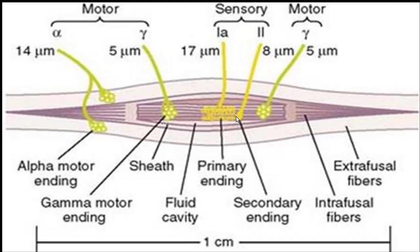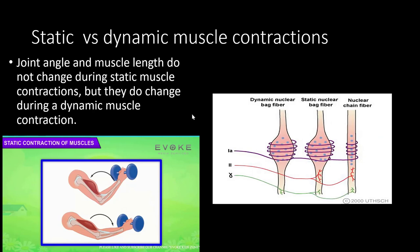The muscle spindle is supplied by both motor neurons and sensory neurons. Sensory neurons are of two types: type Ia and type II fibers. The motor fibers are alpha and gamma.